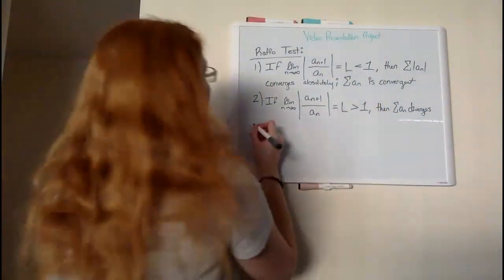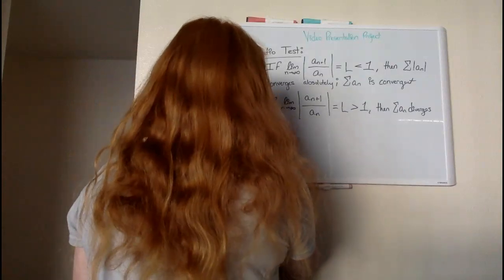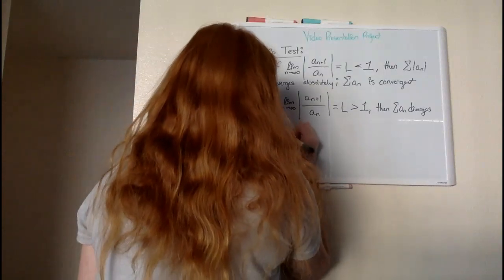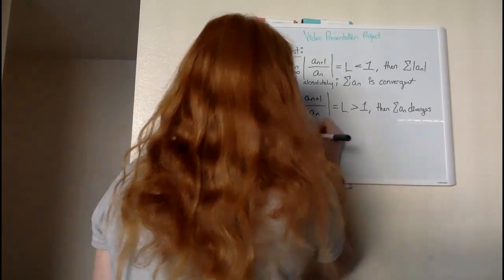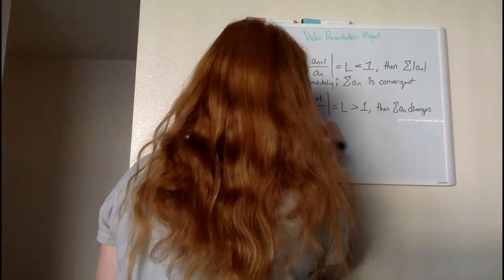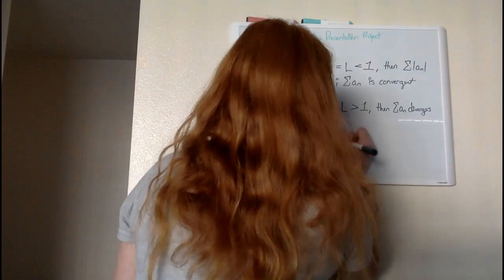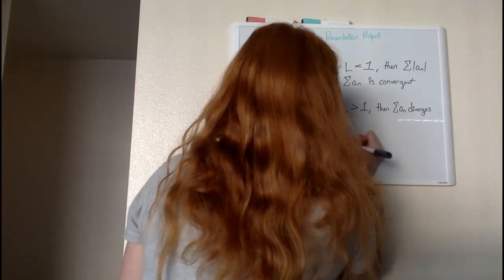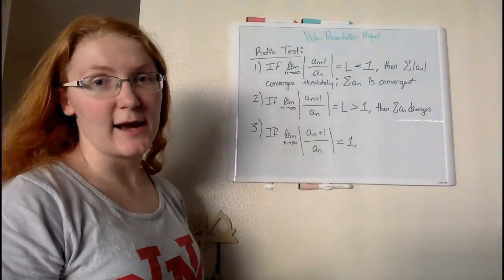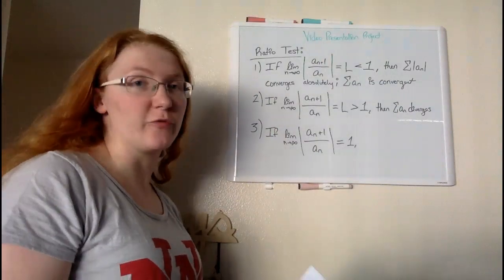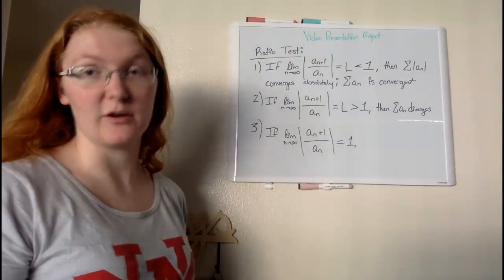And that leaves our last rule, number three. For number three, if our limit as n approaches infinity is equal to one, then the ratio test is actually inconclusive and therefore we know nothing about the convergence or divergence of our series.